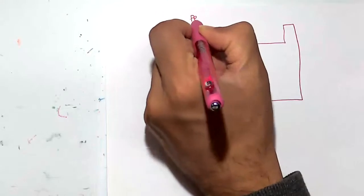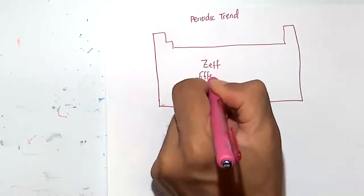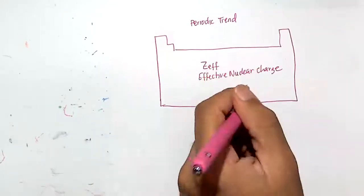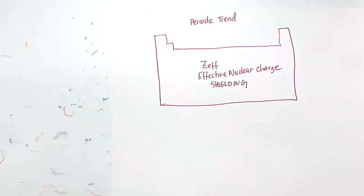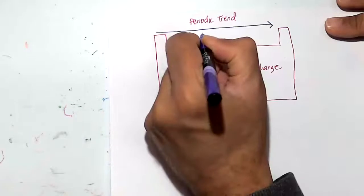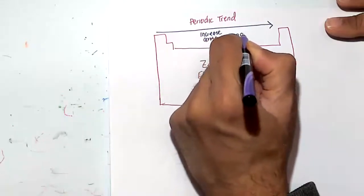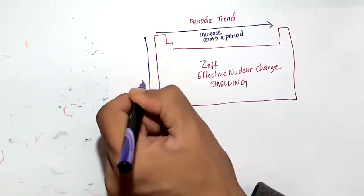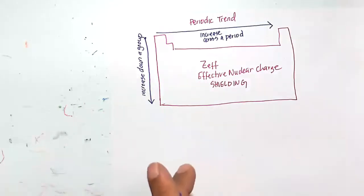The first periodic trend here is effective nuclear charge. It's called Z effective, also known as shielding. This effective nuclear charge, Z_eff, is going to increase across a period like this, and it will increase down a group like this.